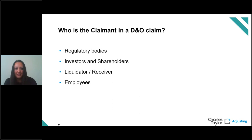The last potential claimants we have listed are employees. We anticipate a rise in employment liability claims as a result of coronavirus and the subsequent change in working practices during the pandemic. These claims are likely to include claims under jurisdiction-specific health and safety regulations, claims of wrongful allegations, allegations relating to a failure to prevent staff from being exposed to coronavirus, or a failure to provide adequate protective equipment.